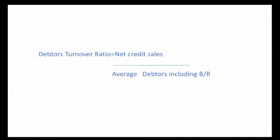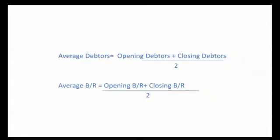Net credit sales divided by average debtors including bills receivable. If you want to find net credit sales: gross credit sales minus sales returns. Total sales minus cash sales gives gross credit sales. Average debtors and average bills receivable are calculated as: opening balance plus closing balance divided by 2.